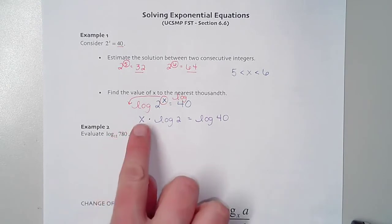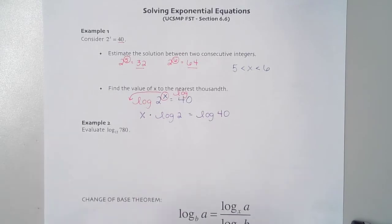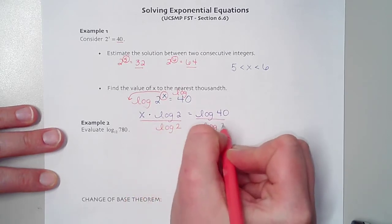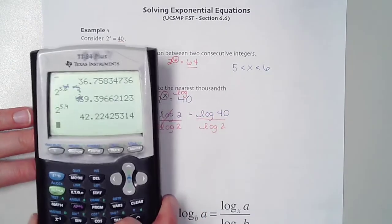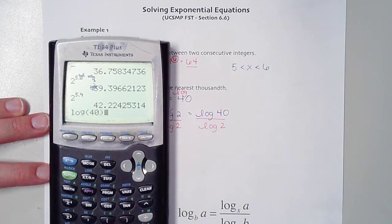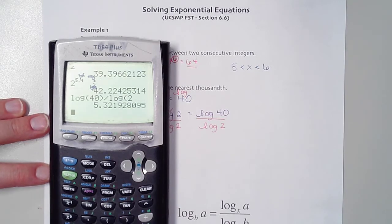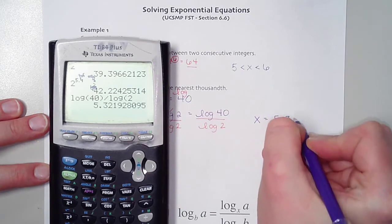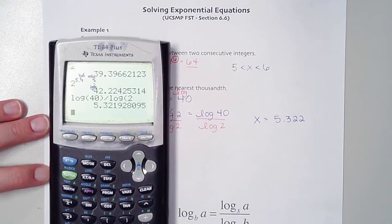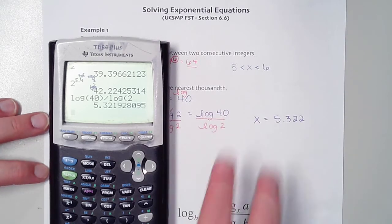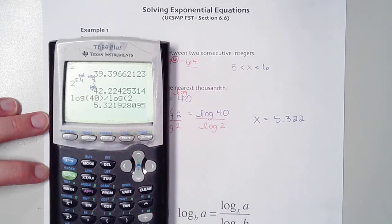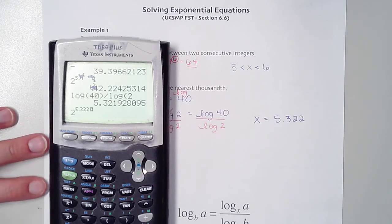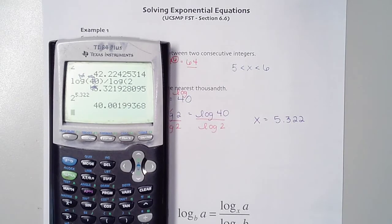Think about this side here, log of 2 to the power of x. Based on those properties we just learned, this exponent can slide down in front of this expression. Now we have x times log of 2 equals common log of 40. The reason that's important is now that x is being multiplied by something, I can get it by itself using division. I can divide both sides by log 2.